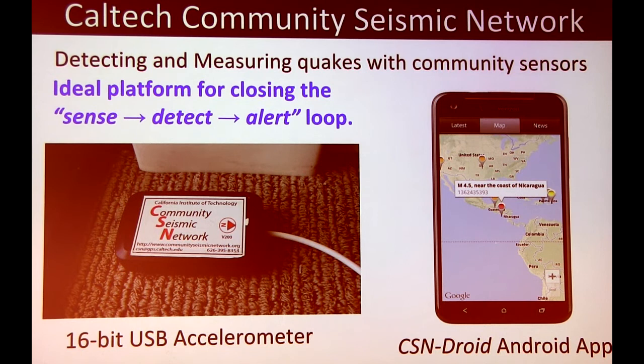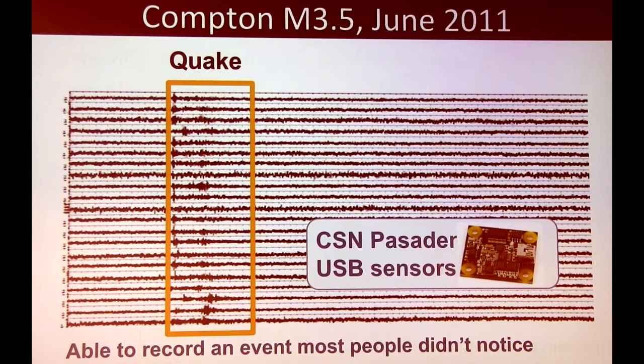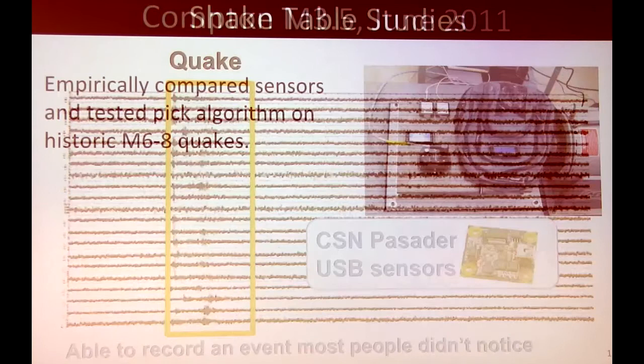For CSN sensors, we detect and measure quakes with sensors deployed in the Southern California area. We have both the 16-bit USB accelerometer, of which we have several hundred deployed, and also sensors from people who voluntarily downloaded the CSN Droid app, which submits sensor readings in real time. We have data going back to a 3.5 earthquake in 2011 — something most people wouldn't notice — recorded in Pasadena with these USB accelerometers. This shows that even though these sensors aren't the high-quality instruments seismologists are used to, they're still capable of producing the information needed to achieve our goals with shake maps and earthquake early warning.